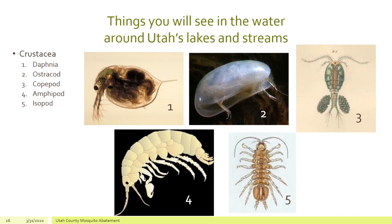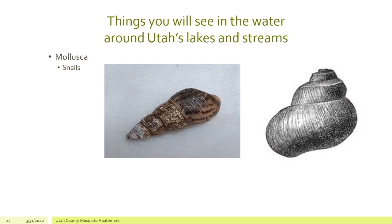The next group is crustaceans. These are crustaceans that are much smaller and live in the water — you'd see them if we had a water sample for you. You have Daphnia, which are sometimes called water fleas, ostracods, copepods, amphipods, and isopods. All of these you would see. They're very small — you'd need a magnifying glass or a microscope for some of them — but you can see little specks, especially like the copepod and the isopod, with your naked eye in the water.